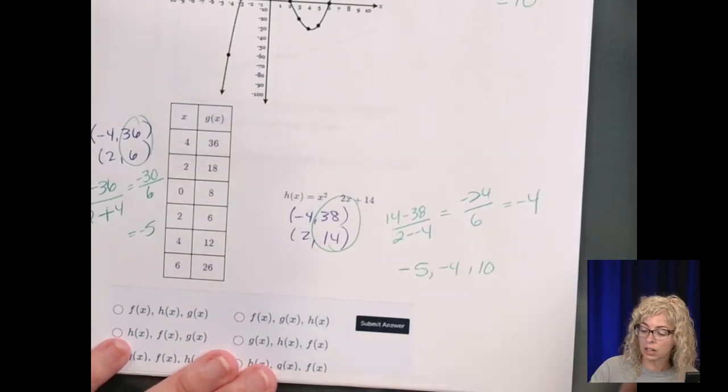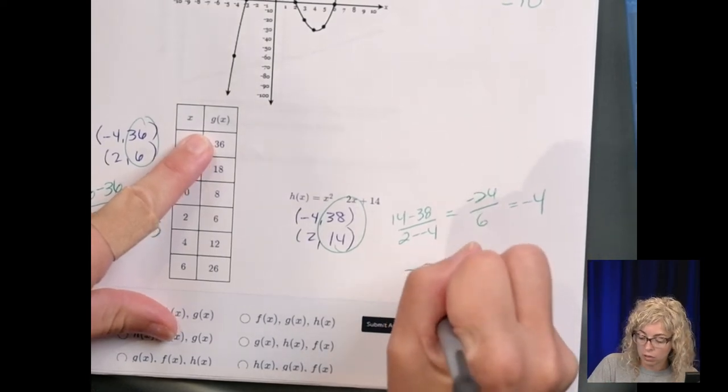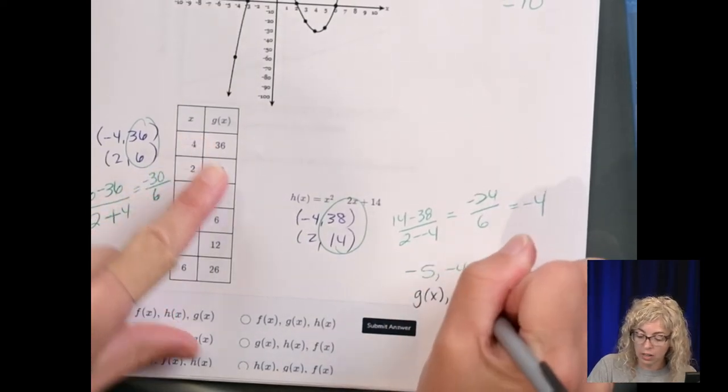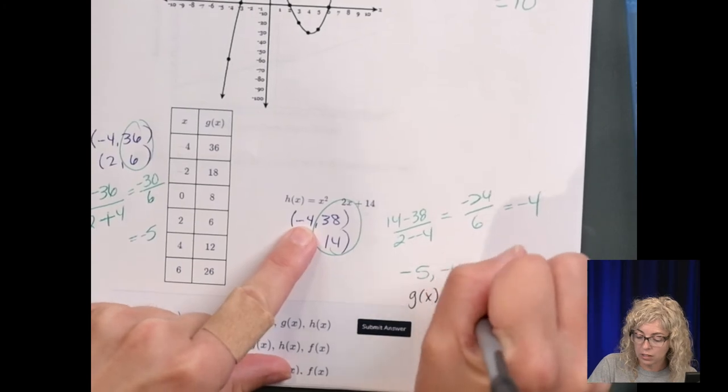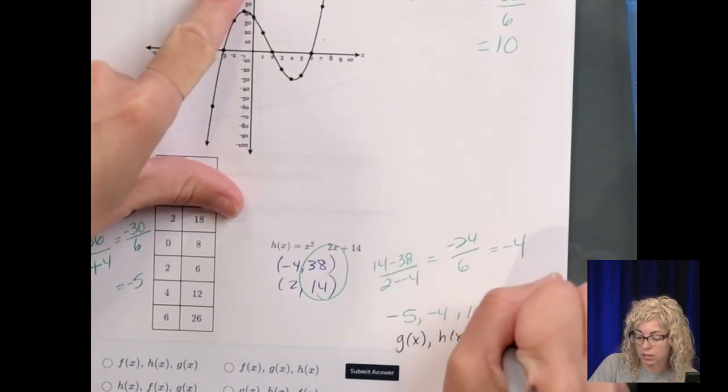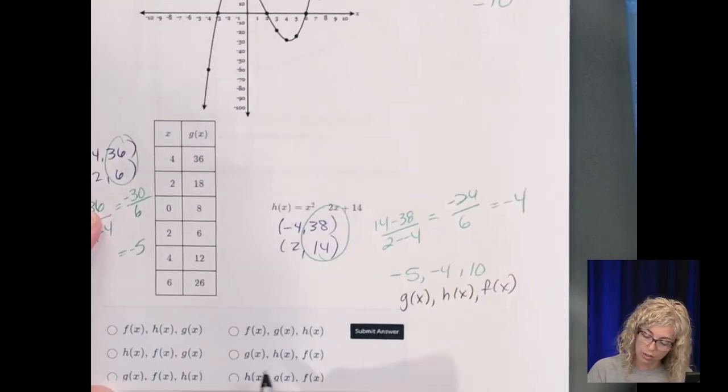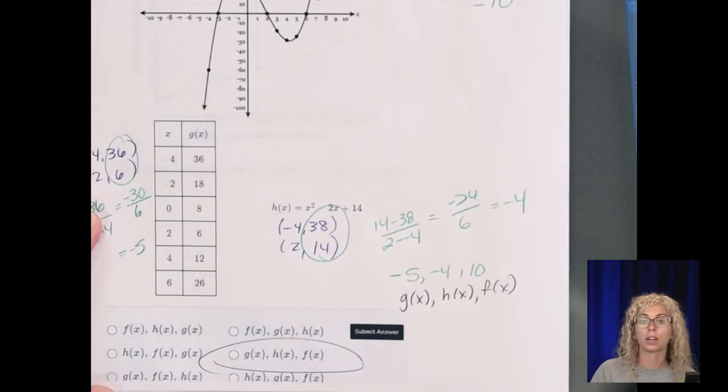So our smallest number, if we order the numbers, is the negative 5. Then the negative 4, then the 10. The negative 5 went with the function g of x. So least to greatest should be g of x. Then the negative 4 went with h of x. And then the greatest was f of x. So g, h, f.